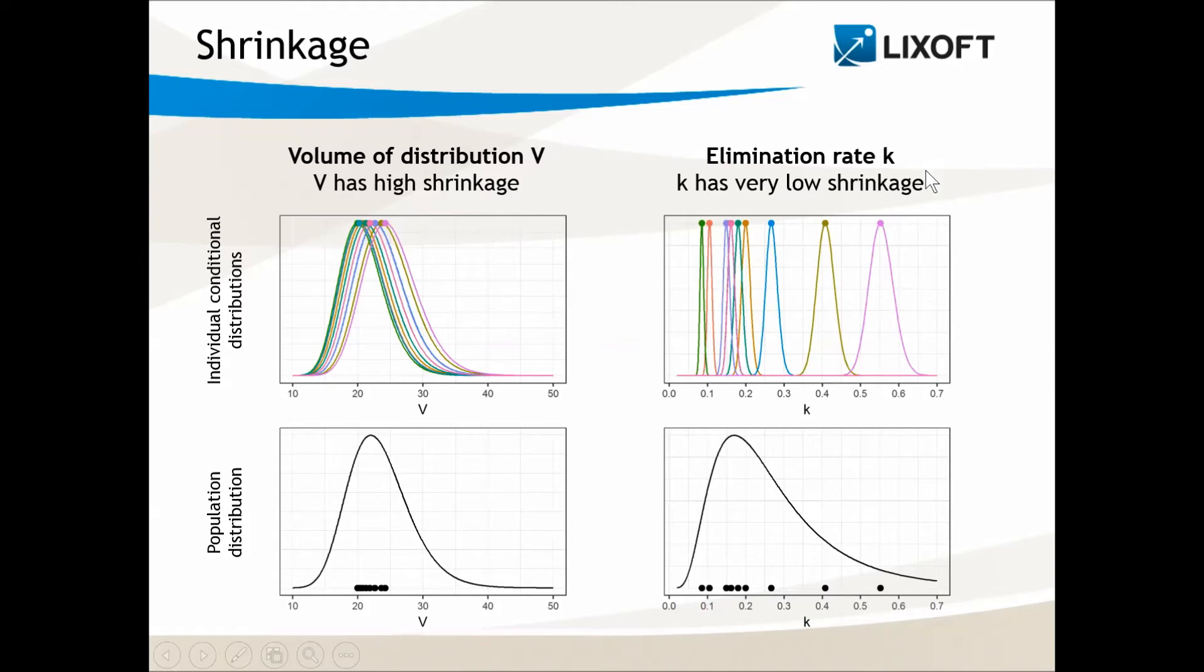On the opposite, for the elimination rate, we have quite a lot of information in the data for each individual, so the conditional distributions are narrow. If we take the mode of each conditional distribution and pull them together, the values are nicely spread over the entire population distribution.